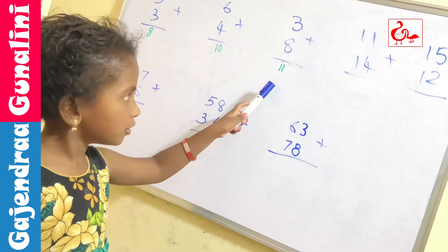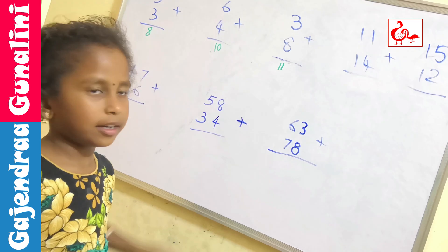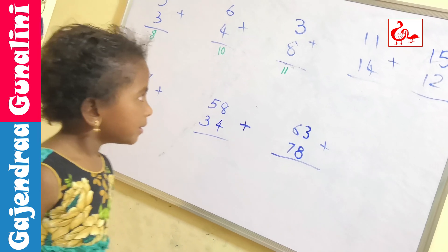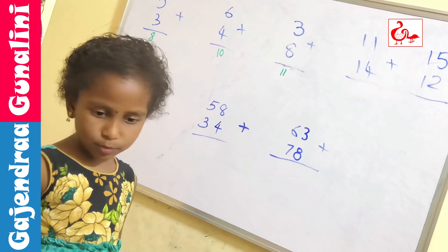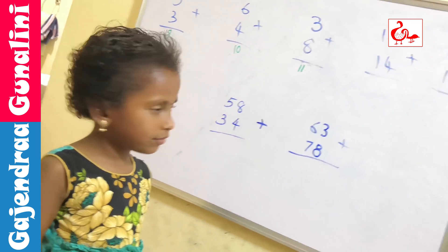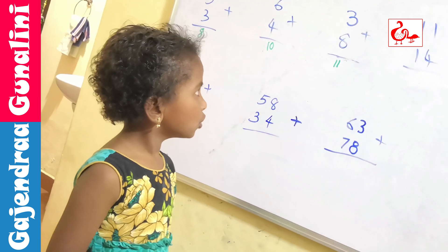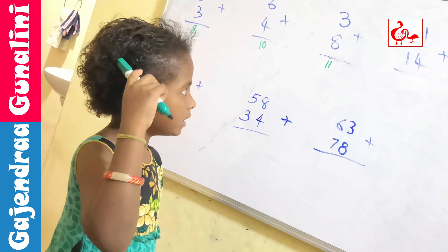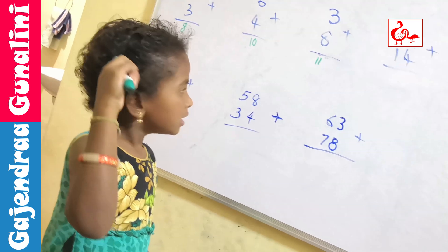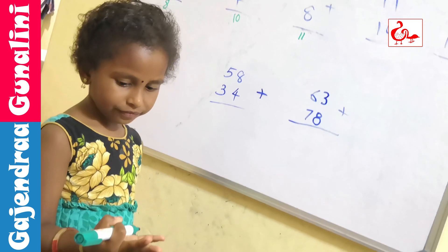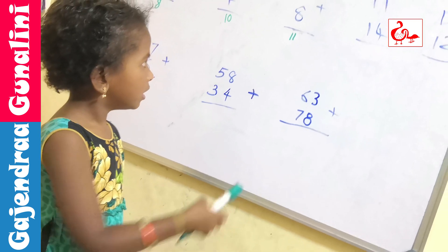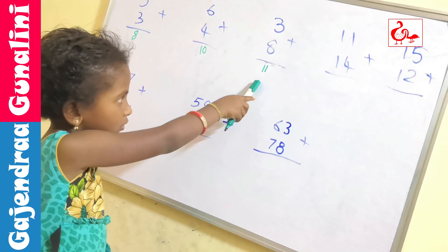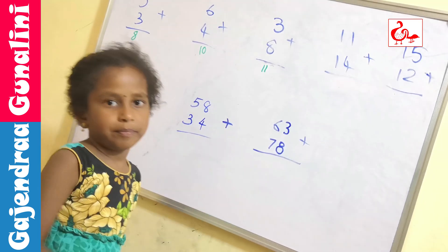I am going to use one trick: big number in the mind, small number in the finger. So, 8 in the mind, 3 in the finger. 8 after: 9, 10, 11. So, we need to write 11.